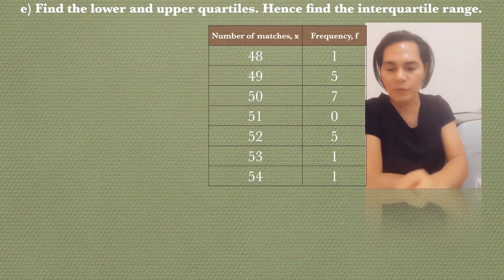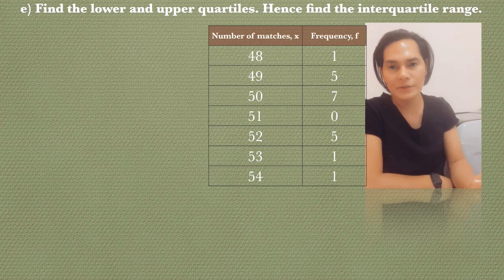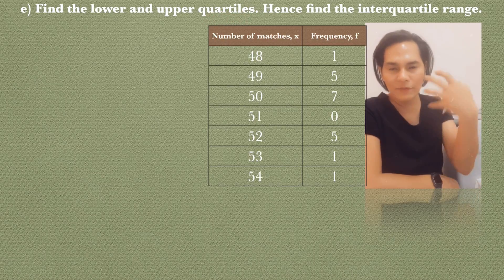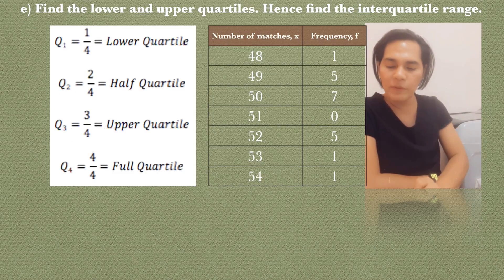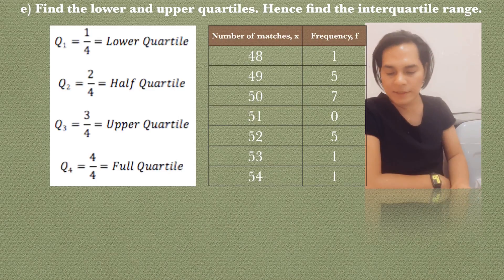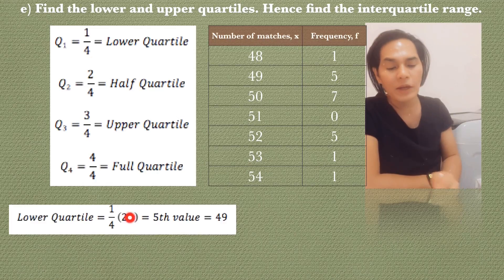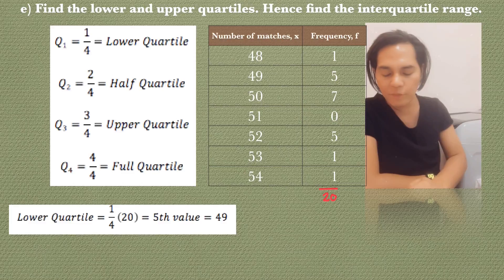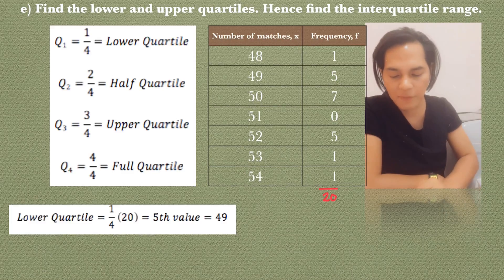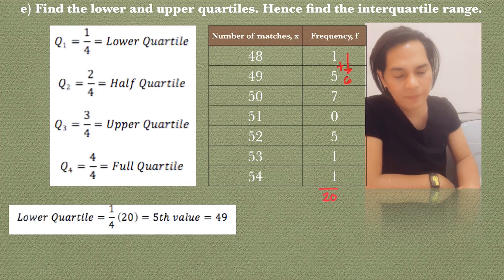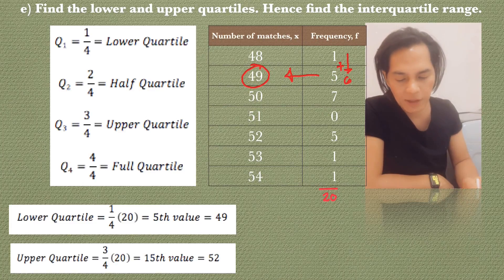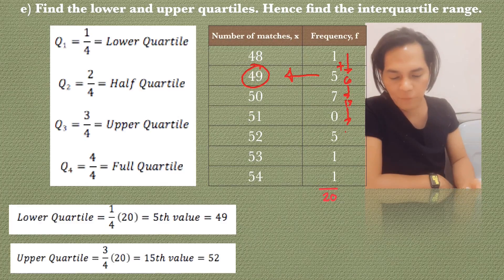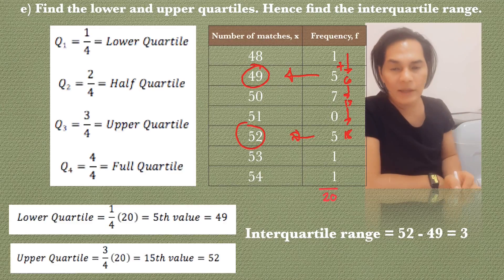The last part is to find the lower and upper quartiles and hence the interquartile range. Quartiles divide the data into four parts: Q1 (lower), Q2 (half), Q3 (upper quartile), Q4. For the lower quartile Q1, take 1/4 of the total frequency: 1/4 of 20 = 5. So the 5th value, counting from the top, is 49. For the upper quartile Q3, take 3/4 of 20 = 15. The 15th value is 52. The interquartile range is Q3 minus Q1: 52 minus 49 equals 3.